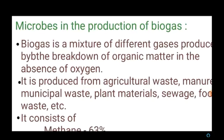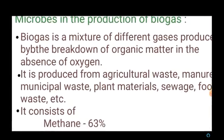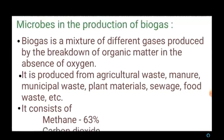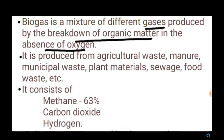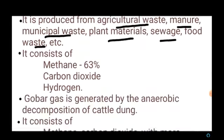Next we are going to see about microbes in the production of biogas. Biogas is a mixture of different gases produced by the breakdown of organic matter in the absence of oxygen. It is produced from agricultural waste, manure, municipal waste, plant material, sewage, food waste, etc. It consists of approximately 63% methane gas along with carbon dioxide and hydrogen.